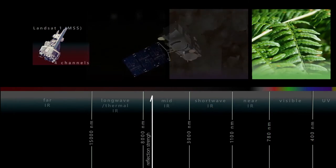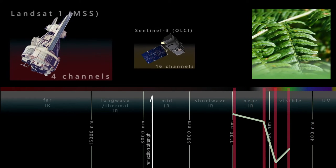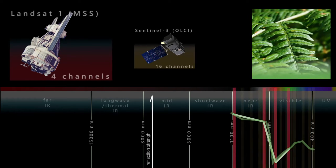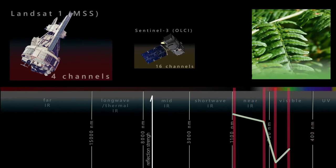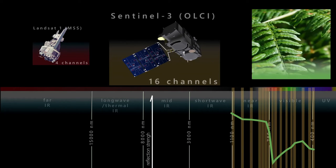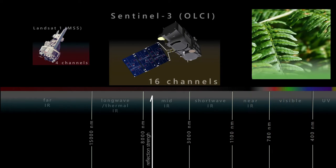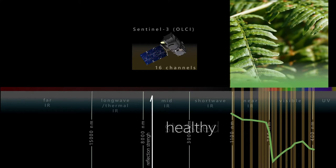Sensors with more spectral channels allow us to see the spectral signature of an object with more precision. This also makes it easier for us to separate objects from one another. By using the spectral signatures, we can differentiate between healthy and stressed vegetation, as they have different absorption behavior.